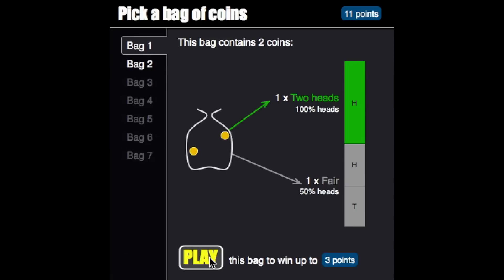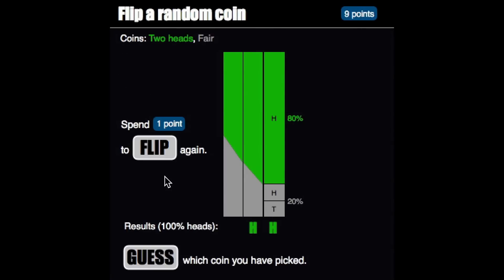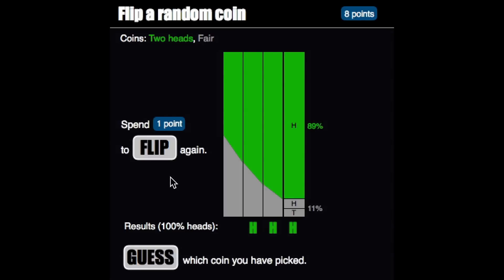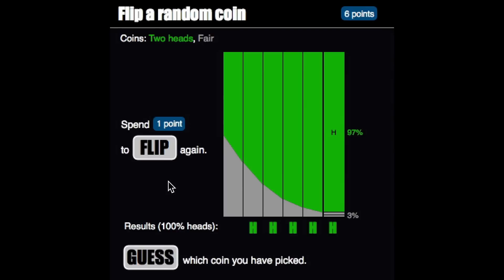Heads is the case where we might want the person to flip again and iterate. In this case, after around five heads, we are more than 90% sure. So we could stop and say, oh, we think the coin is two-headed.